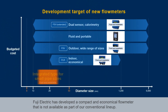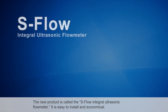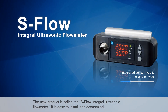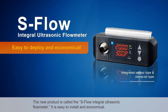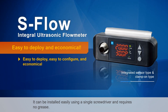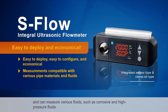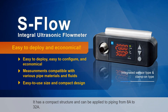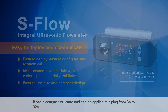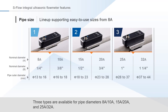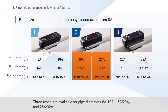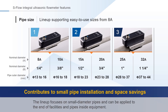Fuji Electric has developed a compact and economical flow meter not available in their conventional lineup. The new product is called the S-Flow Integral Ultrasonic Flow Meter. It is easy to install and economical — it can be installed easily using a single screwdriver and requires no grease. It can be used with a wide variety of pipe materials including copper and PVC pipes, and can measure various fluids such as corrosive and high-pressure fluids. It has a compact structure and can be applied to piping from 8A to 32A, with three types available for pipe diameters 8A–10A, 15A–20A, and 25A–32A. The lineup focuses on small diameter pipes and can be applied to the end of facilities and pipes inside equipment.